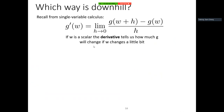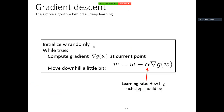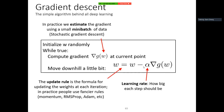We went through that in detail last time — computing the gradient with backpropagation. And once we have the gradient, for the simplest steepest descent update, we set the new weight as the previous weight minus the gradient scaled by the learning rate, which is typically a small value like 0.01.